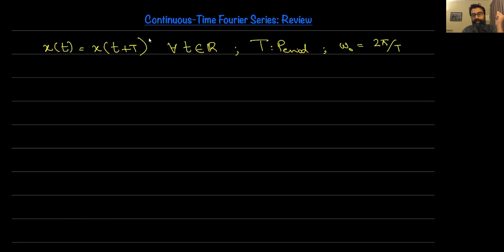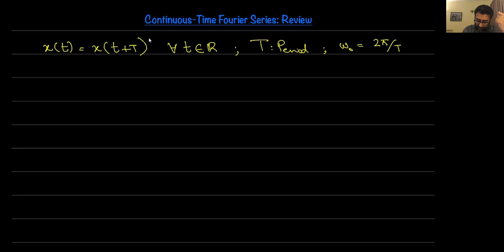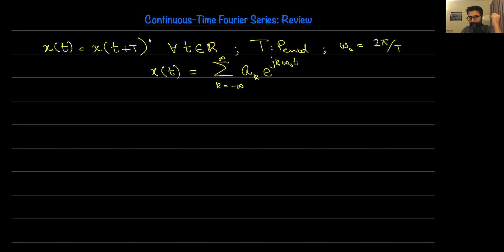The Fourier series representation, if it exists, means that X(T) can be represented as a superposition of complex periodic exponentials. Mathematically, X(T) can be written as a summation, K going from minus infinity to plus infinity, of A sub K times E raised to the power J K omega naught T. This is the Fourier series representation of continuous-time periodic signals, where A sub K are the Fourier series coefficients.